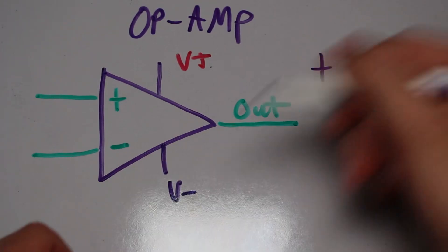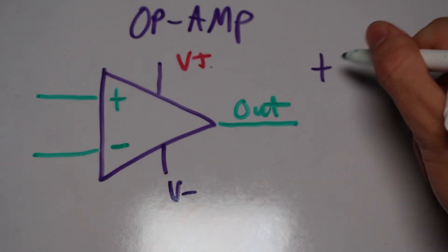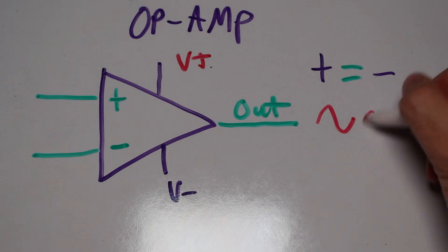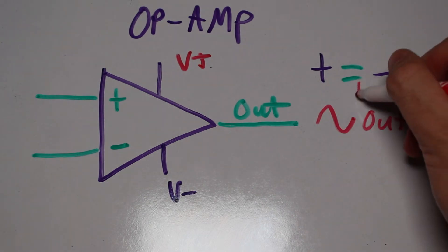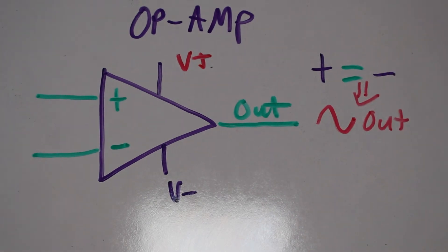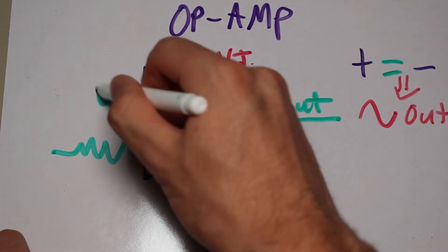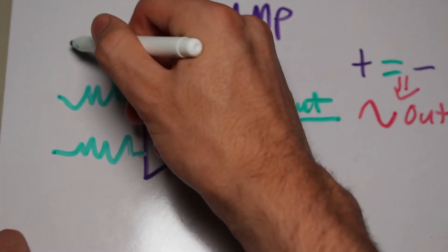First, keep in mind that the op-amp really wants to keep its two inputs of equal voltage, and it will drive the output however necessary to achieve that. The other rule is to keep in mind that the inputs are very high impedance, so ideally they do not affect your circuit at all, allowing you to use weak signals on the inputs.